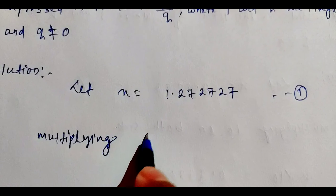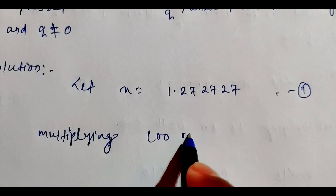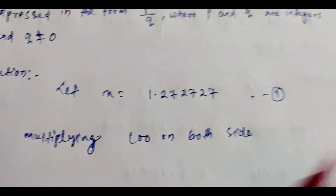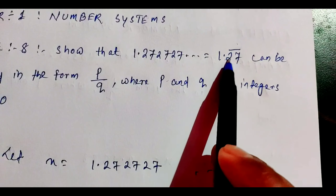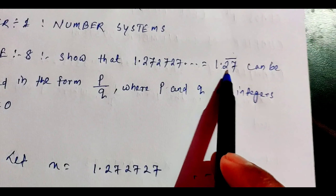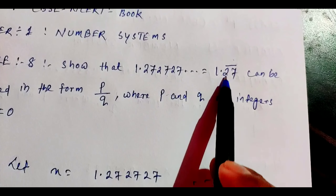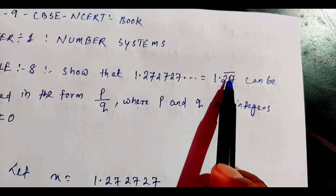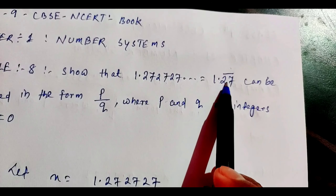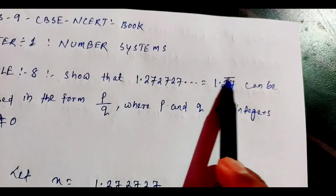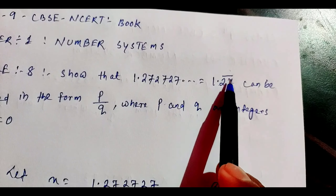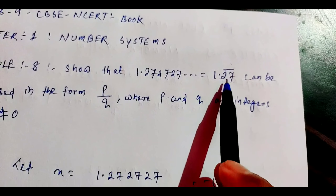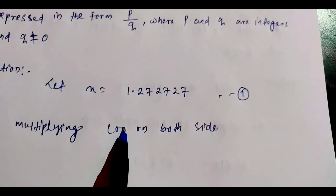We multiply both sides by 100. We use 100 because there are 2 repeating digits — the '27' repeats. If there is 1 repeating digit we multiply by 10, if 2 repeating digits we multiply by 100, if 3 repeating digits we multiply by 1000. Here we have 2 repeating digits, so we multiply by 100.